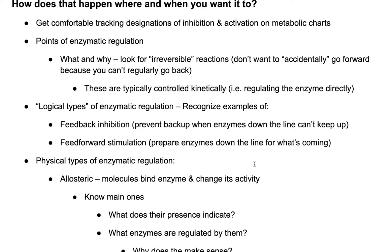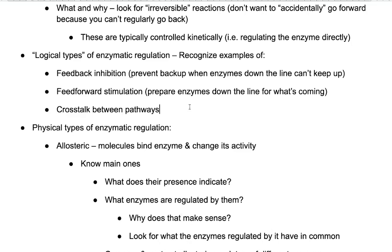Feedback inhibition is when something further downstream inhibits something upstream. Conversely, you can have feed-forward stimulation, which prepares the enzymes down the line for what's coming — if you're building up a lot of stuff upstream, let's hire more people downstream to prepare. You can think of it like a business strategy: if you're getting a lot of new customers, you might want to hire more people; but if you have too many workers sitting around doing nothing, maybe you need to let some of them go. Another type of regulation to keep an eye out for is crosstalk between pathways.